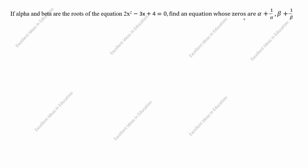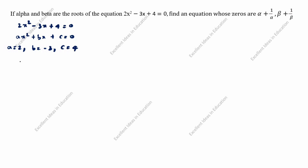What we need to find is that new polynomial. What is given in this question: 2x² - 3x + 4 = 0. The general form of the equation is ax² + bx + c = 0. Comparing, a = 2, b = -3, c = 4.